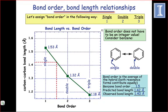Let's assign bond order as shown on this slide. A single bond has a bond order of 1.0, a double bond an order of 2.0, and a triple bond an order of 3.0.